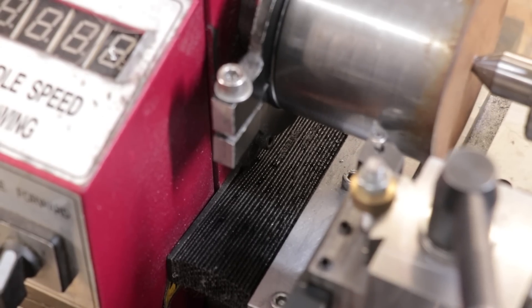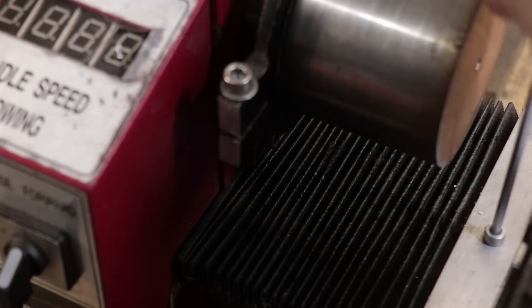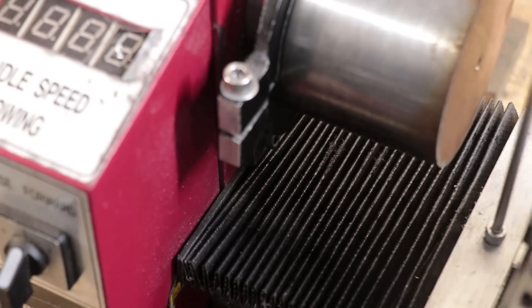But before I can do any machining, I'll have to ditch the way cover and the control box housing because it was actually stopping the carriage from moving all the way forward.